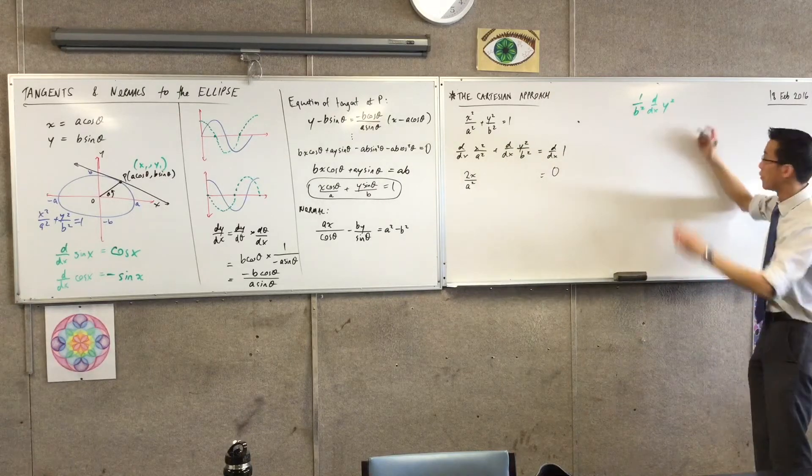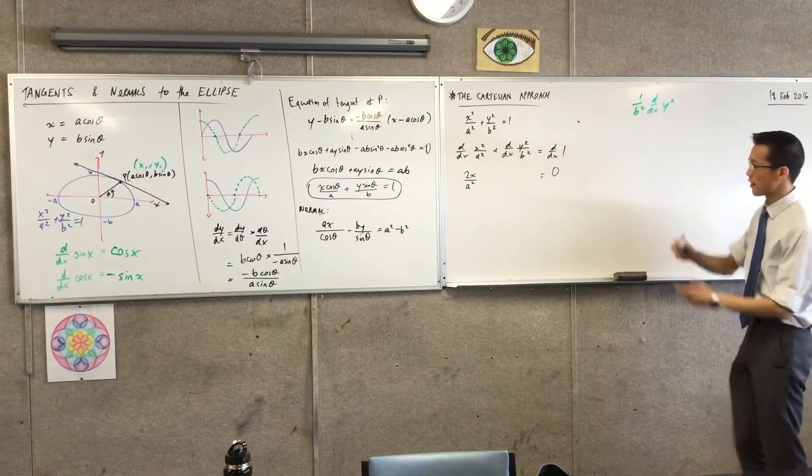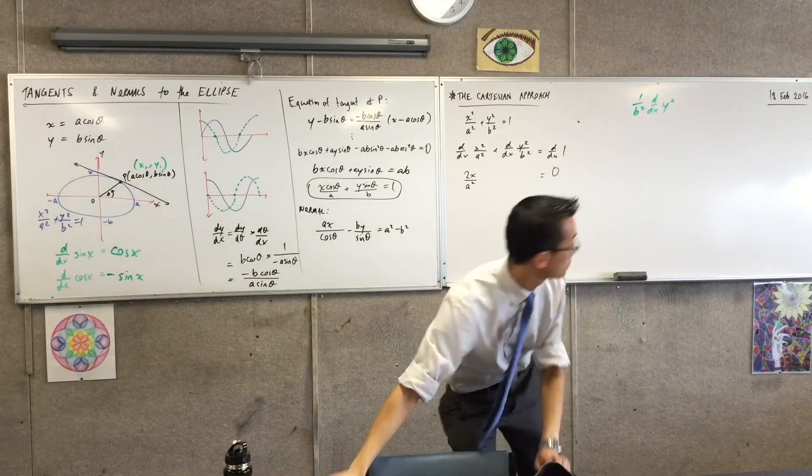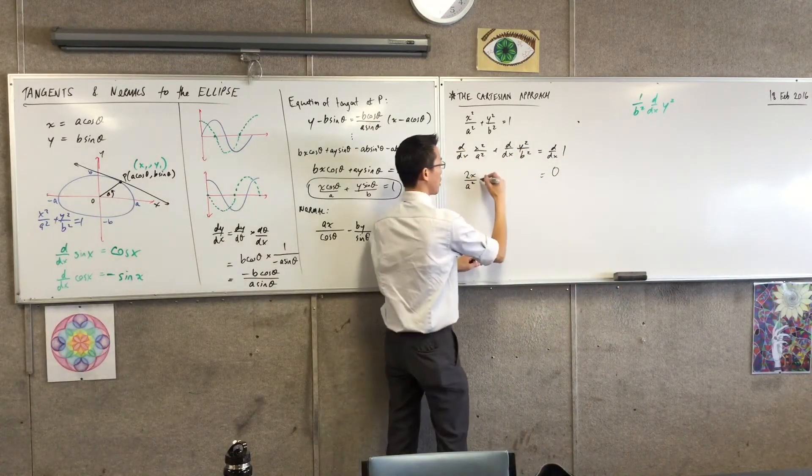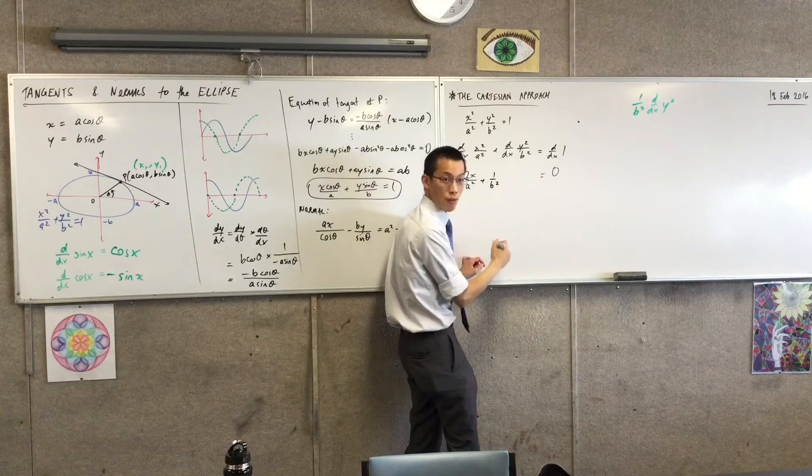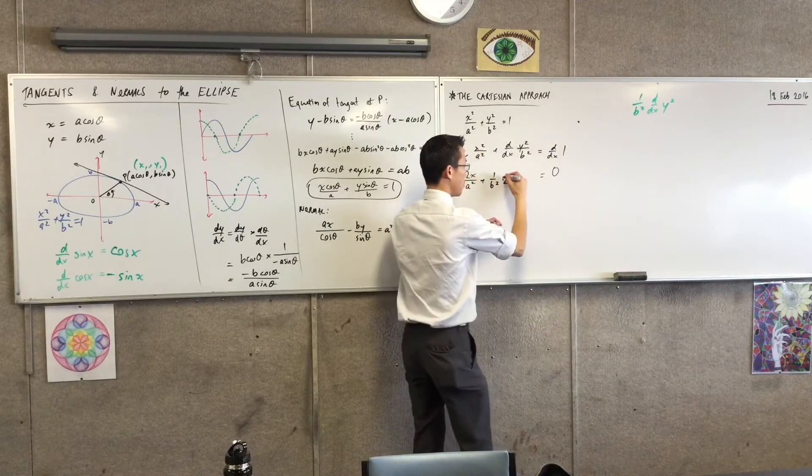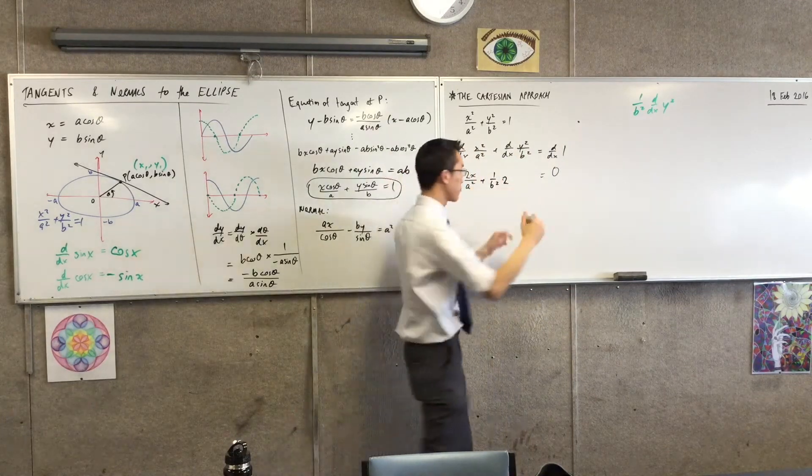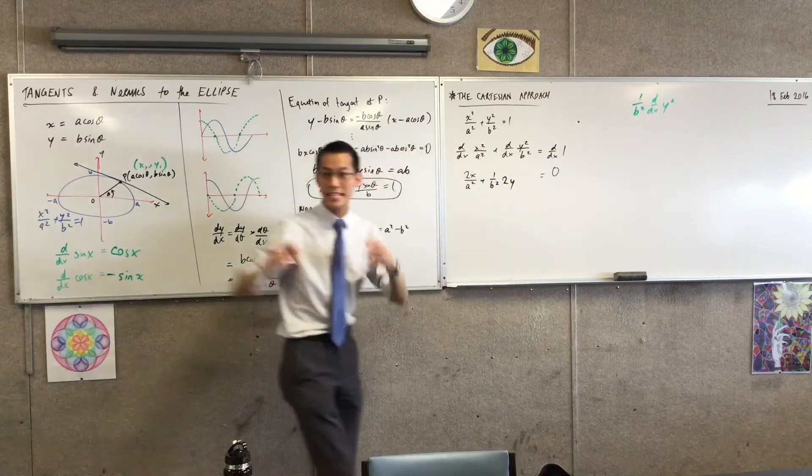So I'm going to differentiate the outside first, so you bring that power down. In fact, I'm going to write it here. You've got the 1/b² at the front. You bring the power down, so I write 2. Then what do you do with power? One. Good, it will justify 1. That's the outside.